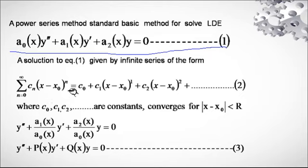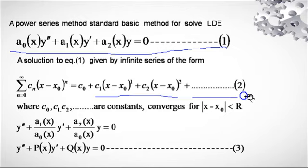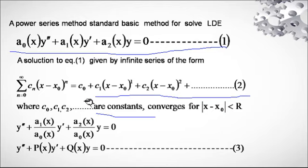If we expand this, putting n equal to 0, 1, 2, 3, and so on, we will get the series expansion, where c₀, c₁, c₂, and so on, cₙ are the constants. This series converges for |x − x₀| < r.